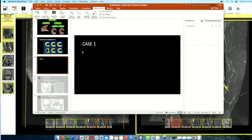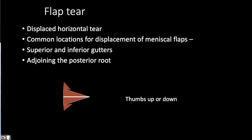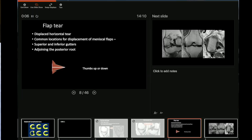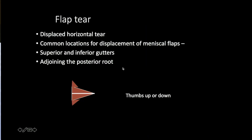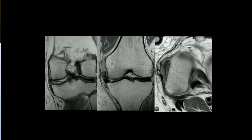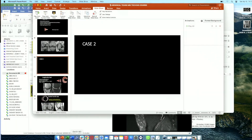A flap tear is a displaced horizontal tear. Common locations for meniscal flaps are the superior and inferior gutter, as well as adjoining the posterior root, and the anterior intercondylar notch. In another example, you can see that there is a horizontal tear, the inferior part of the meniscus is missing, and coming anteriorly this is a thumbs up sign where the flap is displaced in the superior medial gutter.